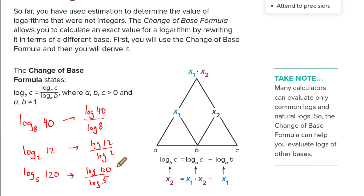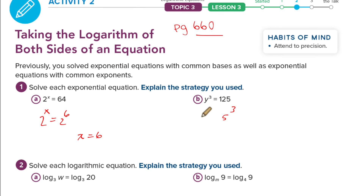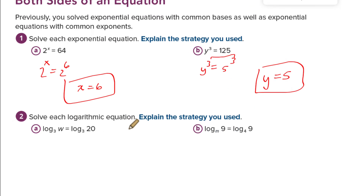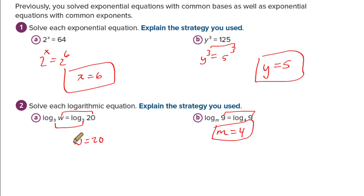Now on page 660 — again, this is a lot of review. 2 to the x equals 64: common base gives us 2, 4, 8, 16, 32, 64 — that's 6 — so x equals 6. For y to the third equals 125, I know 125 is 5 to the third. If the exponents are the same the bases must be the same, so y equals 5. Next, solve each logarithmic equation: common base with a log means a common argument, so w equals 20. Common argument means the bases have to be the same. This is stuff we already know.